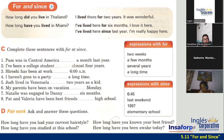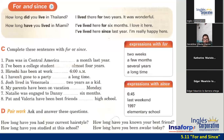Number two: I've been a college student for almost four years. Number three: Hiroshi has been at work since 6 a.m., right? Number four: I haven't gone to a party for a long time. Number five: Josh lived in Venezuela for two years as a kid.